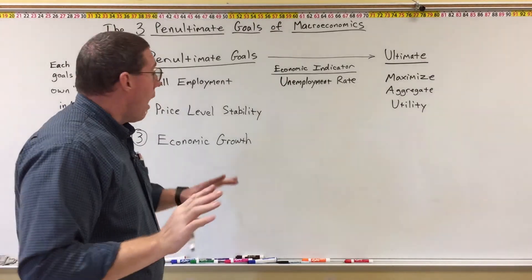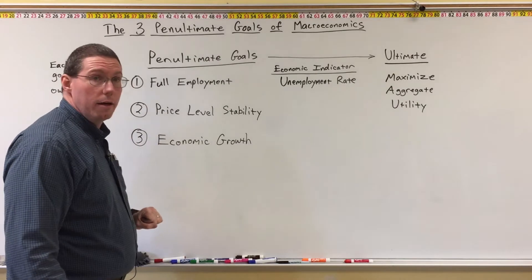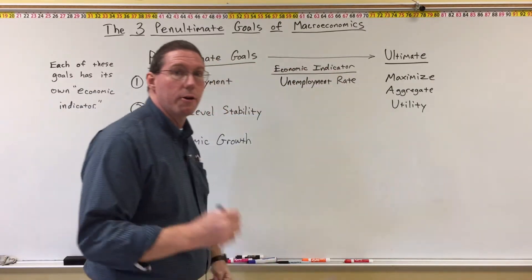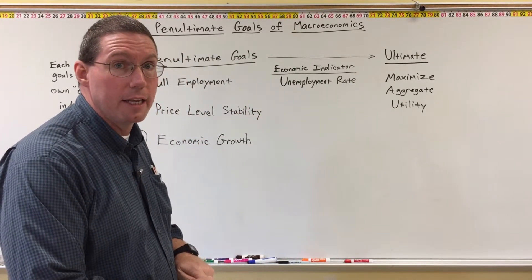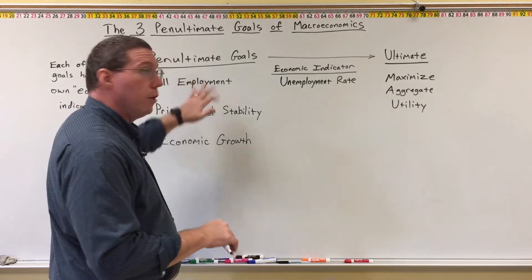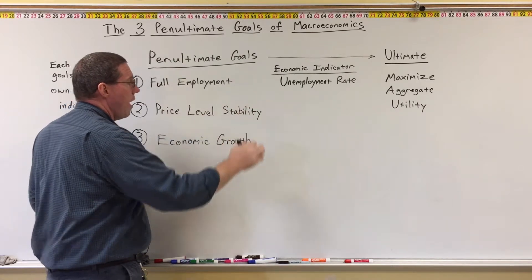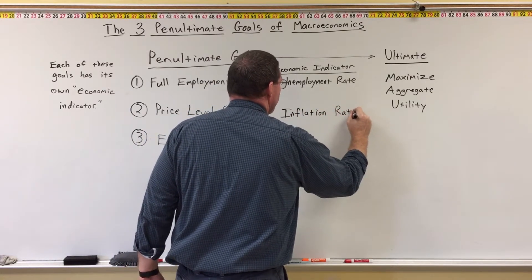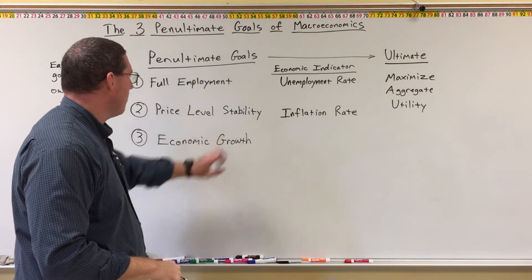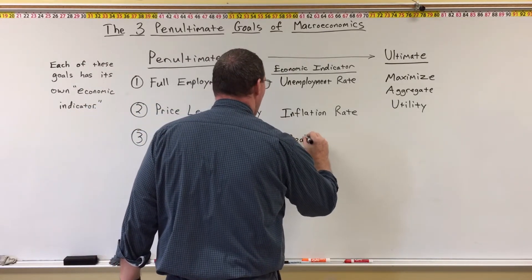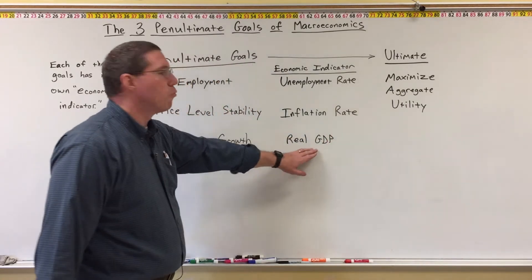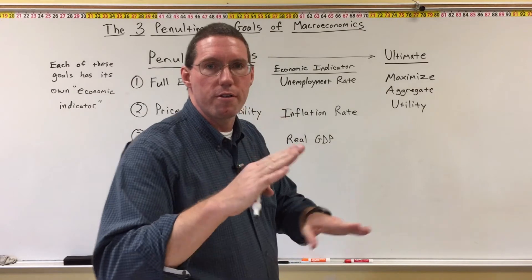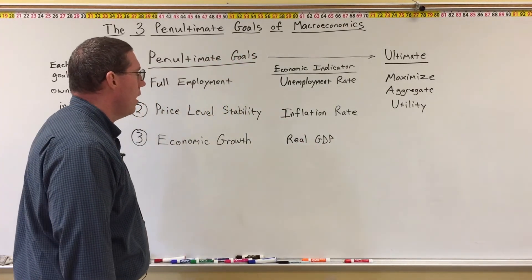I'm going to have a separate lesson for each one of these penultimate goals, and in each lesson I'll go over the economic indicator and how to calculate it. In this lesson we're going to focus on full employment. For price-level stability, the economic indicator is called the inflation rate. The economic indicator for economic growth is based on the calculation for real GDP — specifically a real GDP growth rate — and we'll talk more about that when we do the lesson on economic growth.